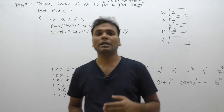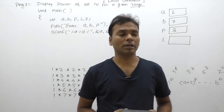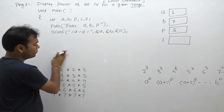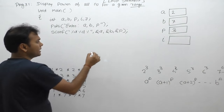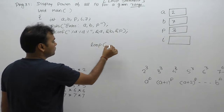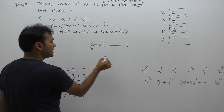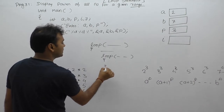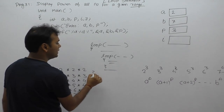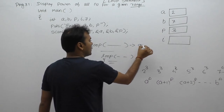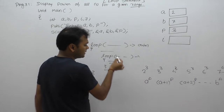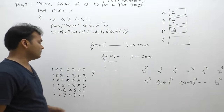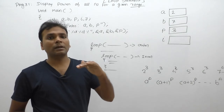The data will be displayed in the form of rows and columns. The total number of required loops is two — an outer loop and an inner loop, in the form of a nested loop structure. The first loop is named the outer loop and the second is named the inner loop.